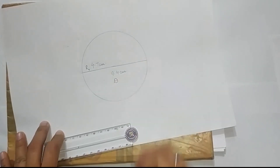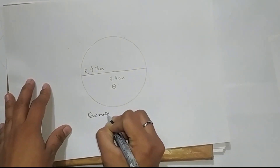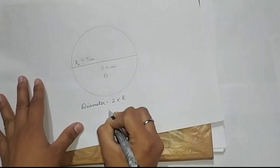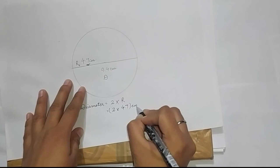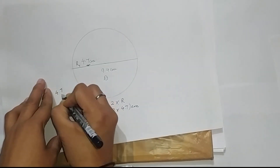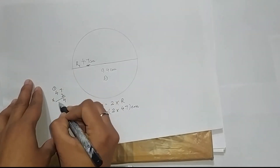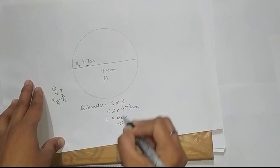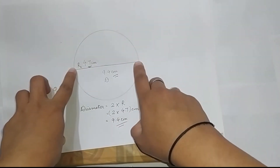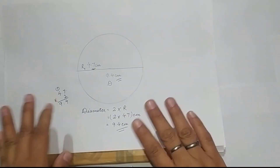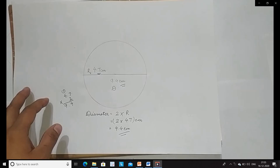यह radius, यह diameter. चलिए हम चेक कर लेते हैं कि diameter जो हमारा आया है वो scale से measure करने पर सही है? Diameter is equal to 2 × r, तो 2 × 4.7 cm = 9.4 cm आ गया. इसका मतलब आप scale से radius draw करके diameter भी find कर सकते हैं. और आपको diameter scale से measure करने पर सही है या नहीं, यह formula लगाकर multiply करके चेक कर सकते हैं.